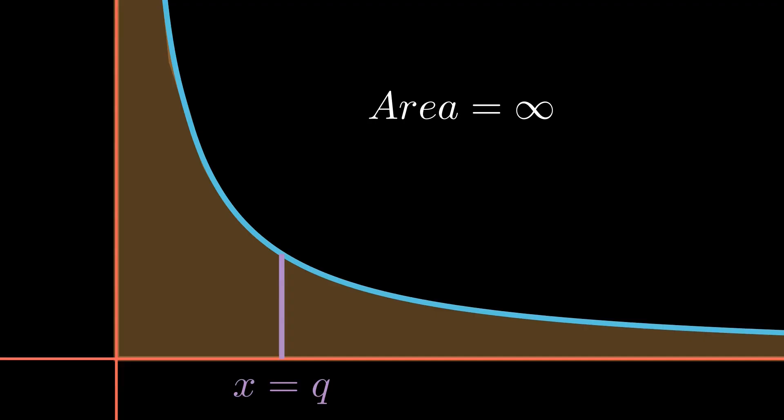To make this more clear, we have an area to the left which we'll call Al and an area to the right which we'll call Ar. Al is equal to infinity and Ar is equal to infinity. However, are they equal to each other?